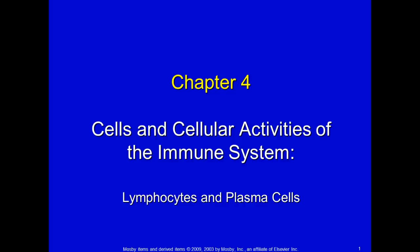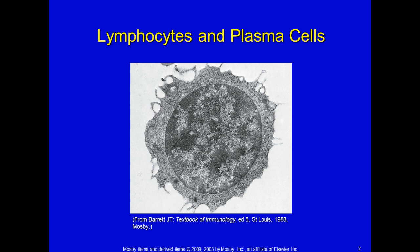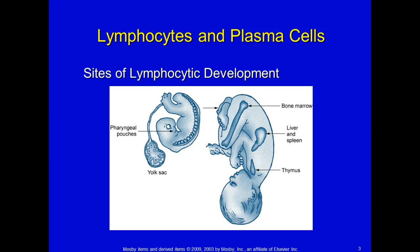Welcome to Immunology: the cells and cellular activities of the immune system — lymphocytes and plasma cells. At the end of this section we will also cover some electrophoresis. Lymphocytes and plasma cells are something you've probably covered in your hematology class. Lymphocytes are primarily the cells that fight viruses. Plasma cells secrete something called immunoglobulins.